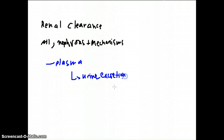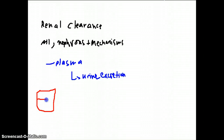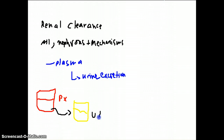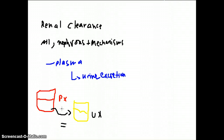If this does not make sense it will soon enough. Basically, let's think that we have a box of plasma with a certain concentration of a substance X. This same concentration will be later found in another box of urine — in other words, the same solute concentration found in the plasma will later be found the same in urine.